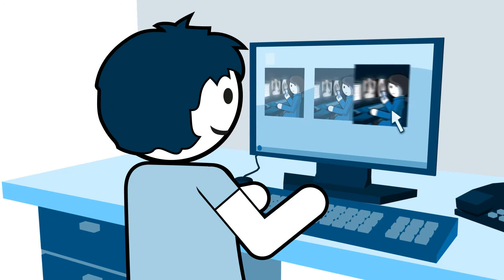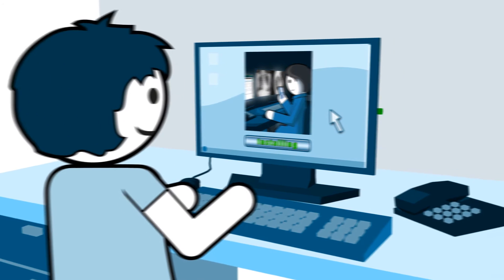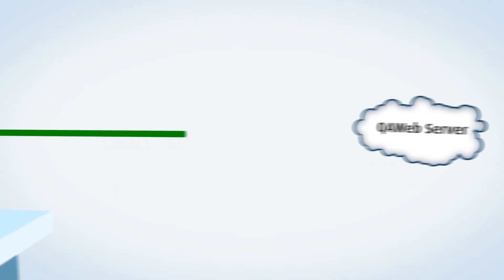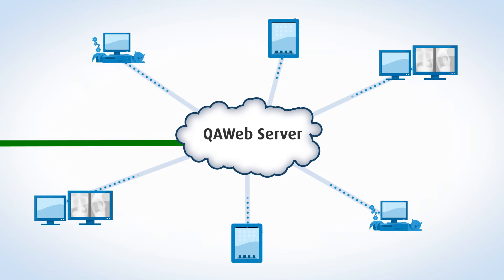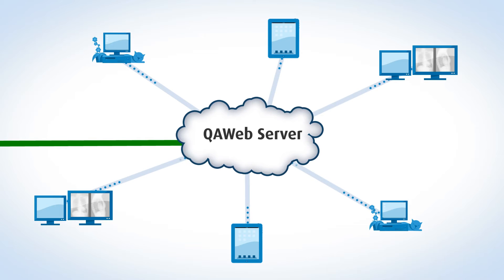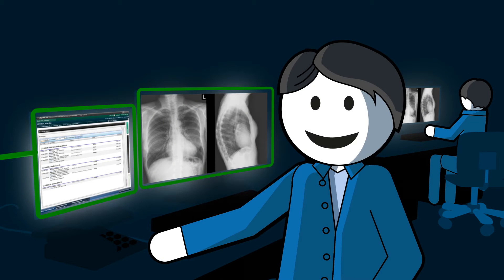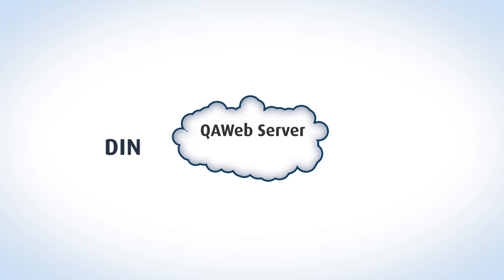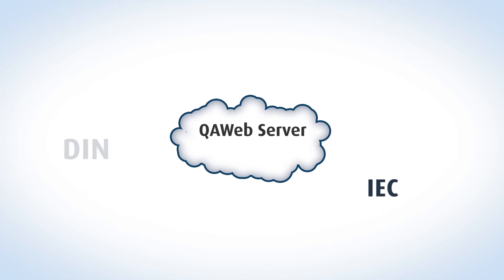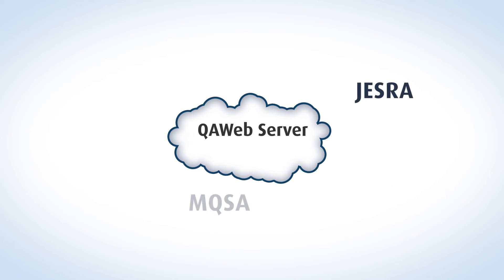After installation, which can be done remotely, Medi-Cal QA Web automatically detects all medical displays throughout the hospital enterprise. The system then performs automatic calibration and compliance checks without interrupting workflow. Thanks to auto-healing, Medi-Cal QA Web even makes necessary adjustments in real time, ensuring compliance with medical standards at all times.